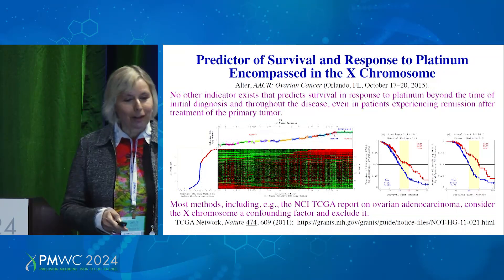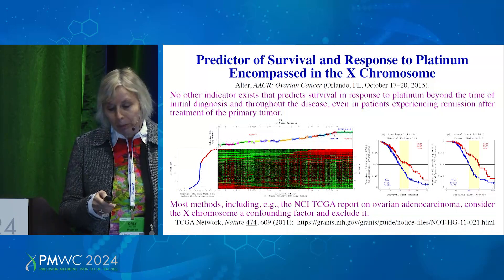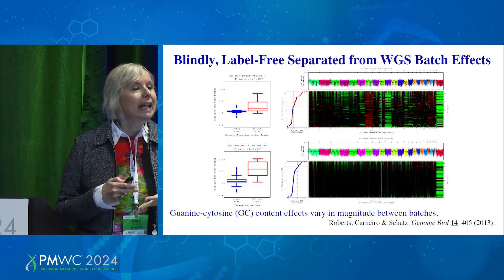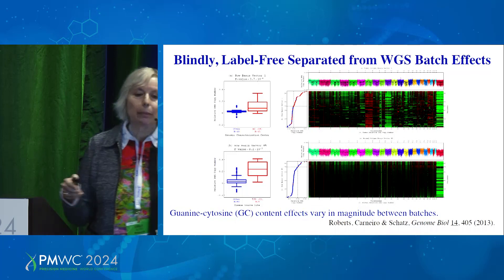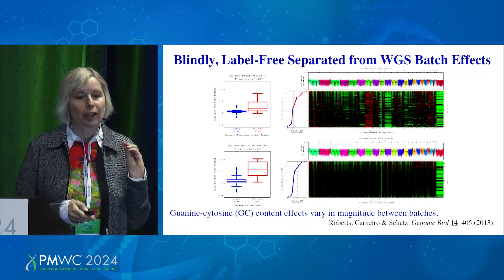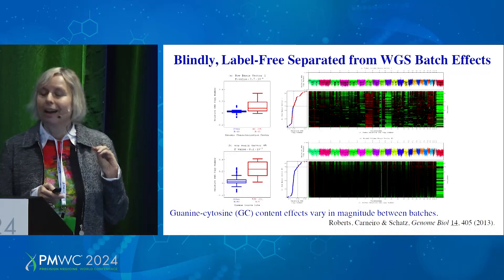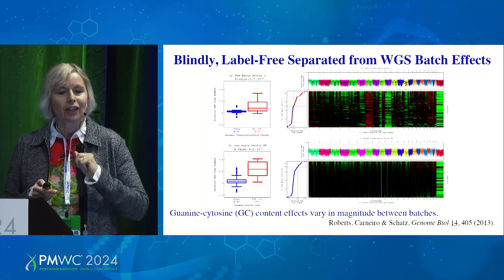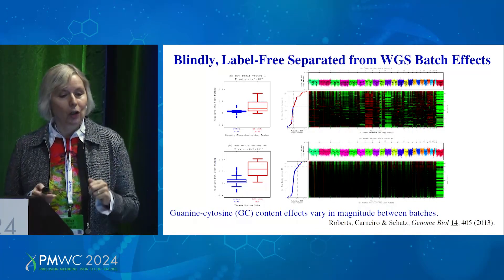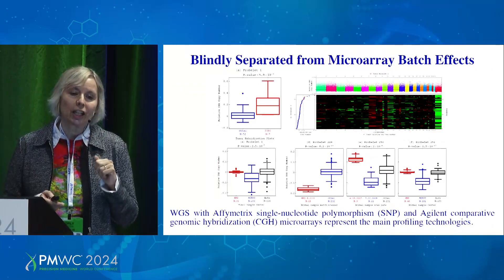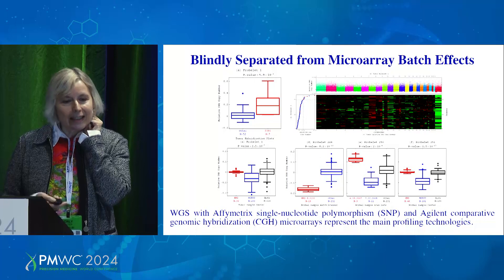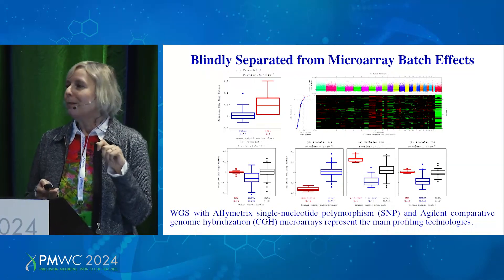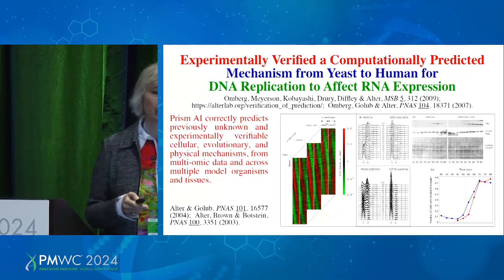Similarly, we blindly — without any labels and without any a priori knowledge — separate batch effects from our predictors. I'm showing you here batch effects in whole genome sequencing that separate the genomic characterization centers and appear correlated with guanine-cytosine content variation. There are batch effects in microarray data, epigenomic data, and Agilent data. We've seen all these batch effects and we're separating them all.